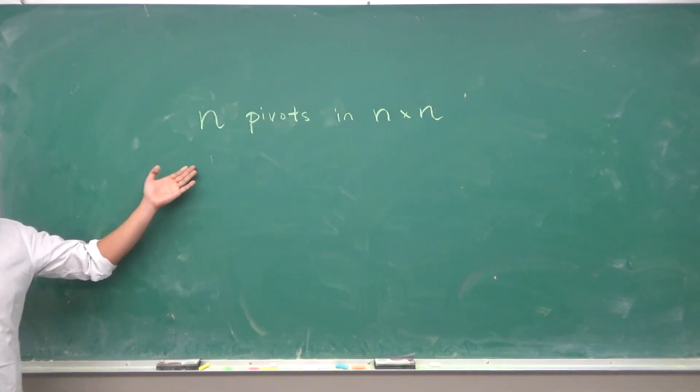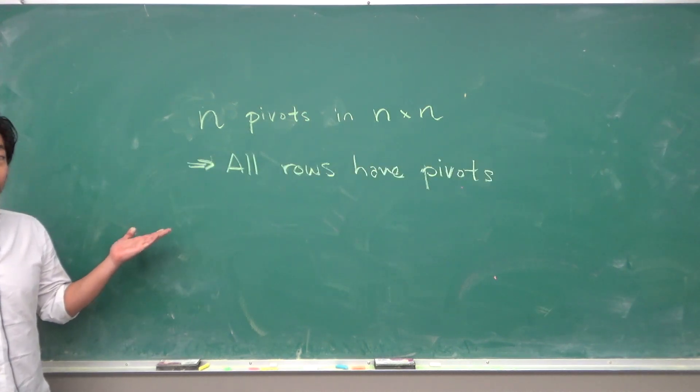But also if there are n pivots in an n by n that would also mean that all the rows have a pivot position.